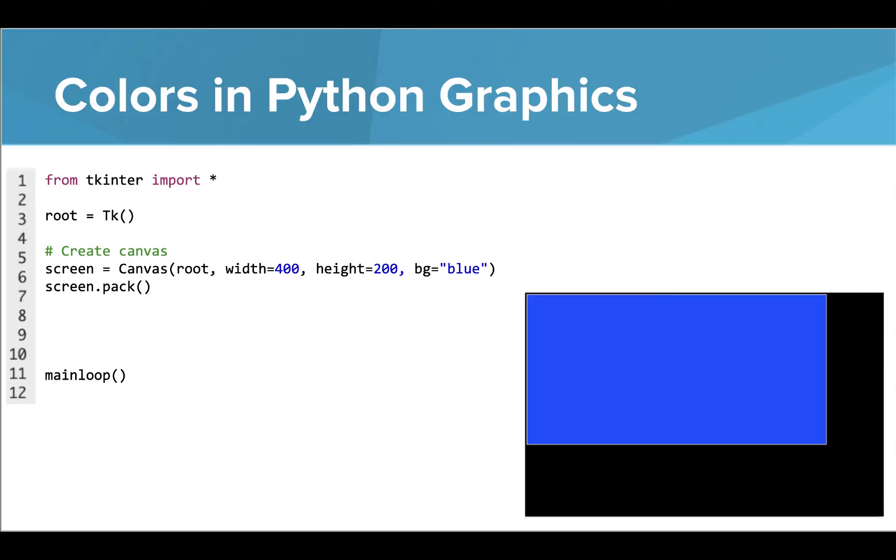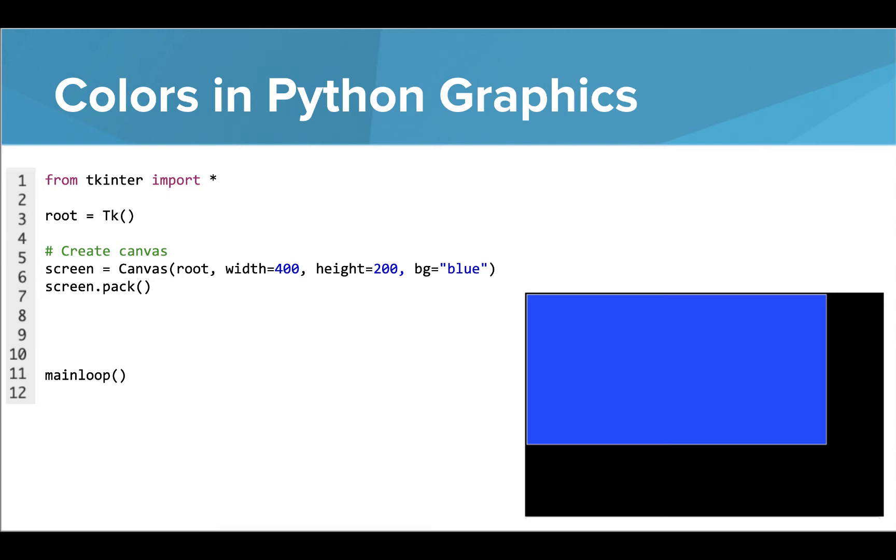Right now, we're starting out with a 400x200 canvas with a blue background. We're simply using the color name blue, but what if we wanted a lighter blue? Well, one option we have is to use the color name light blue instead of blue. But this still only gives us a minimal number of options for a light blue background.